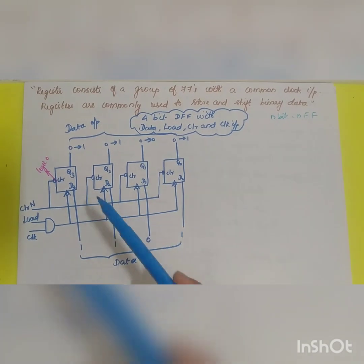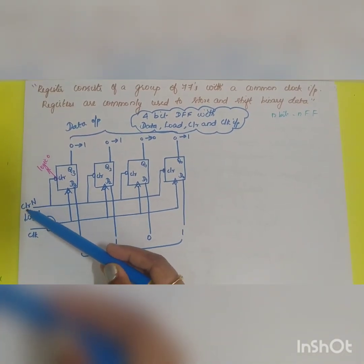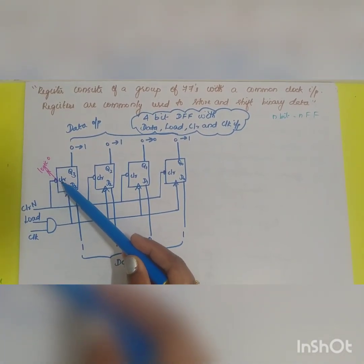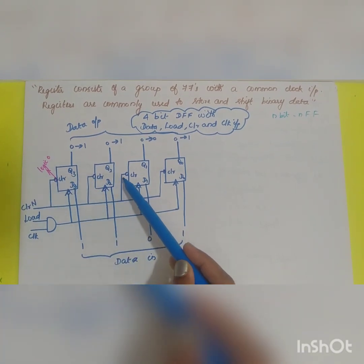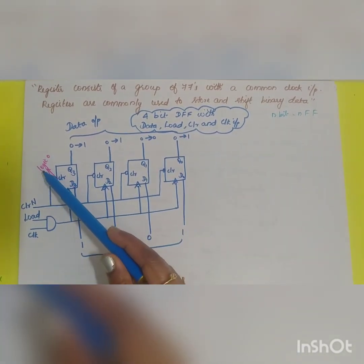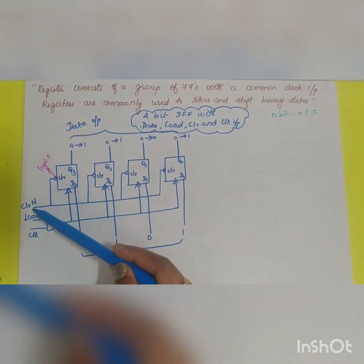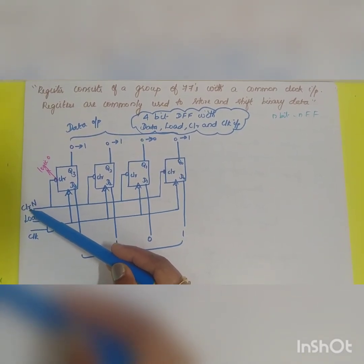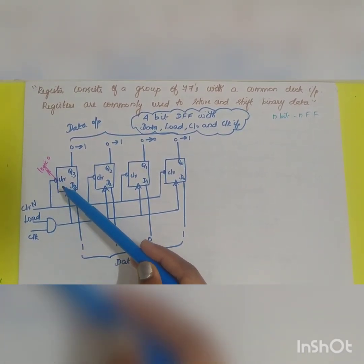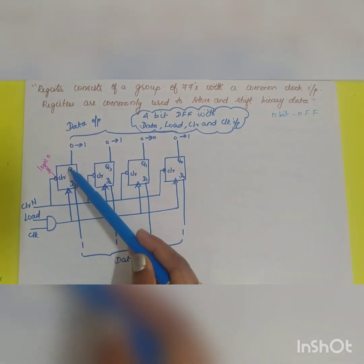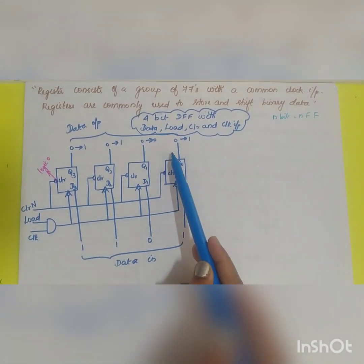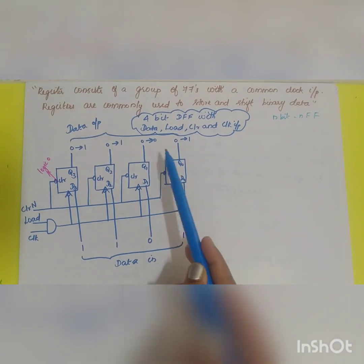The clear signal is given by CLRN. You know that there is a bubble that designates that it is logic 0. Normally the clear will be equal to 1 and if it is turned to 0 during the operation then all the register outputs will be cleared to 0.